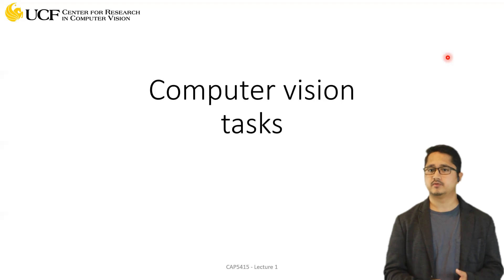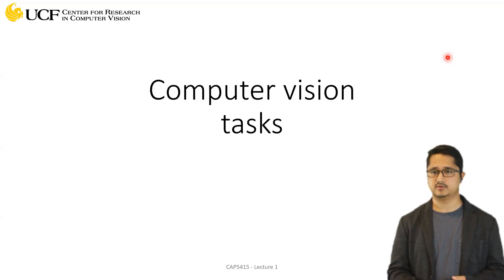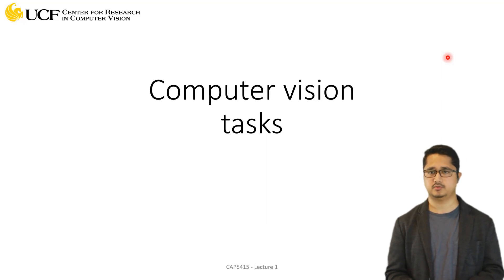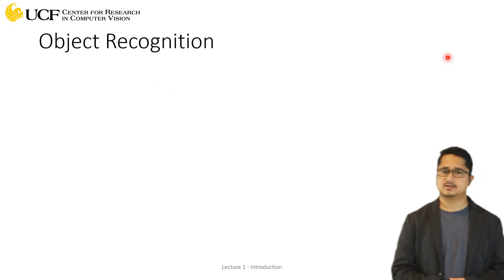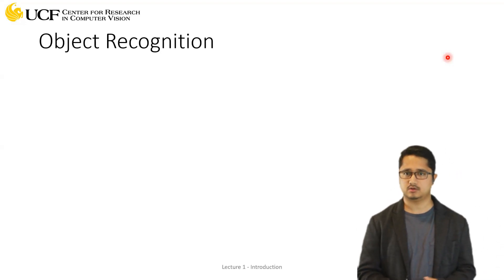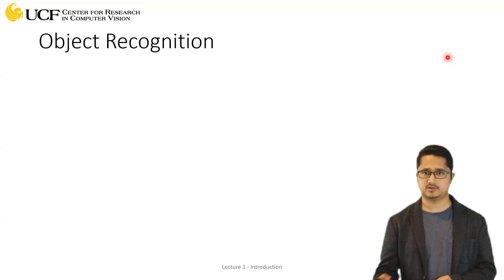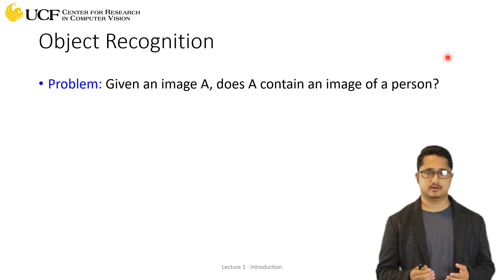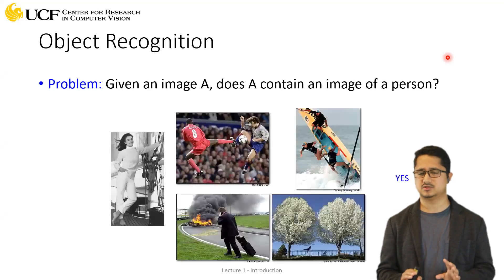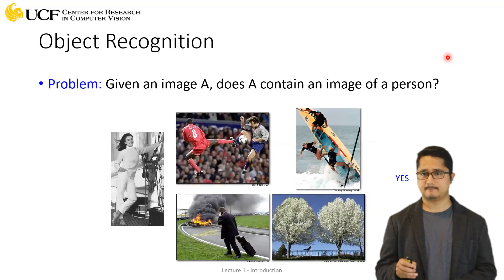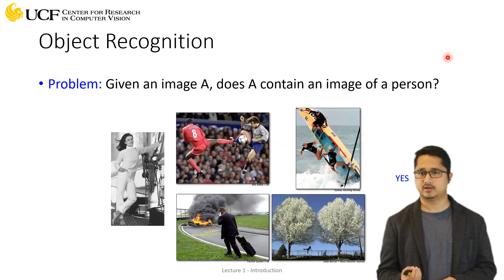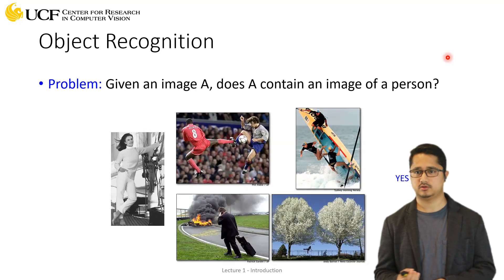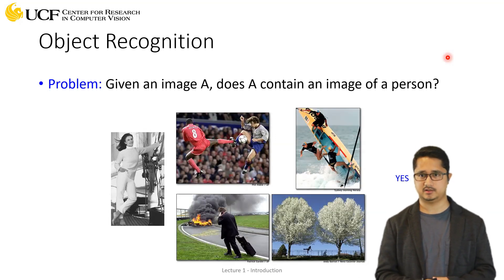Today we'll talk about different computer vision tasks which are really important and widely studied in this domain. The first task is object recognition, also called object classification — both terms are used interchangeably. The idea is: given an image that might have some objects present in it, you have a set of categories and you have to predict whether any object category in that list is present in the image or not. It's basically a yes or no question for each category.